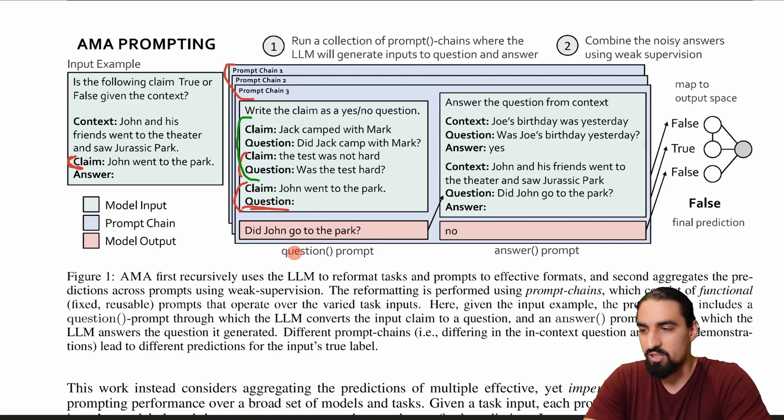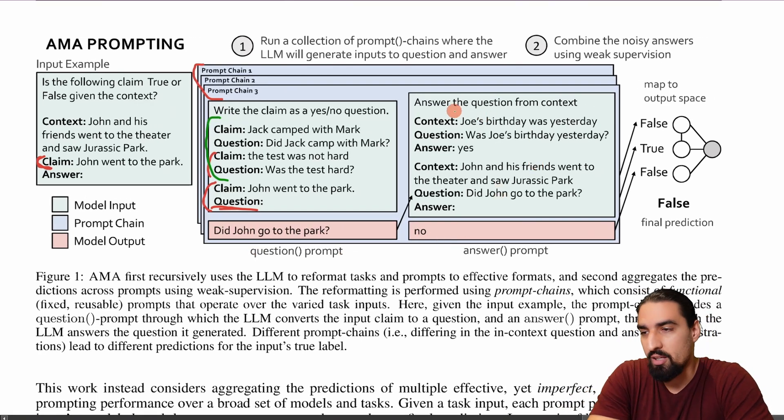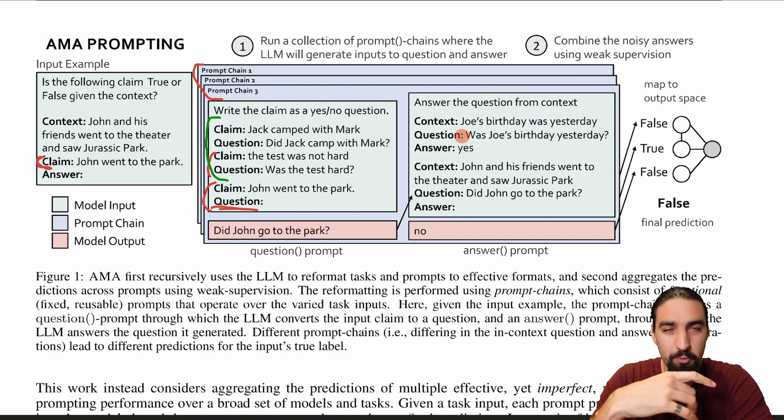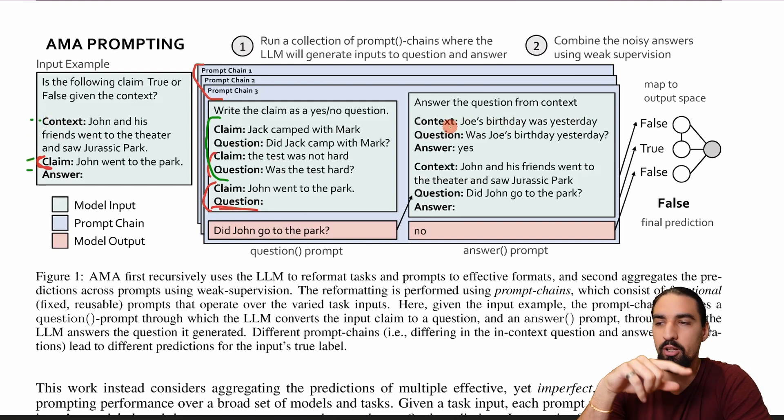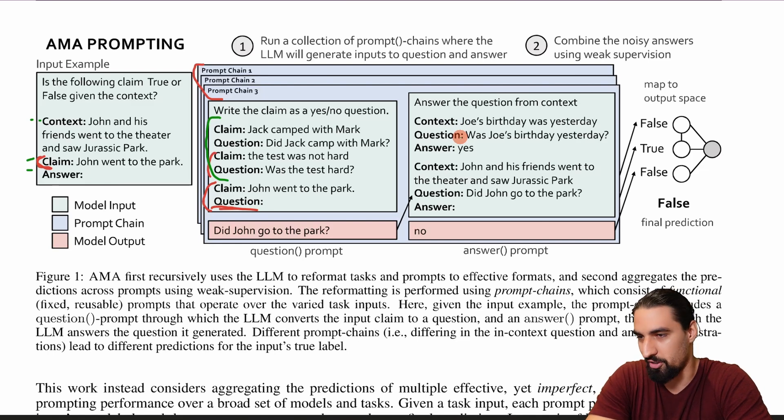And so now this is the first stage of this pipeline, the so called question prompt. And then the second part is, you can see here, answer the question from context. Okay, so context, Joe's birthday was yesterday, then the model is supposed to first output the question instead of going directly from context and claim into the answer, they instead go through the question as the intermediate step, and that they found out gives better results. Okay, a little bit of alchemy and dark magic here.